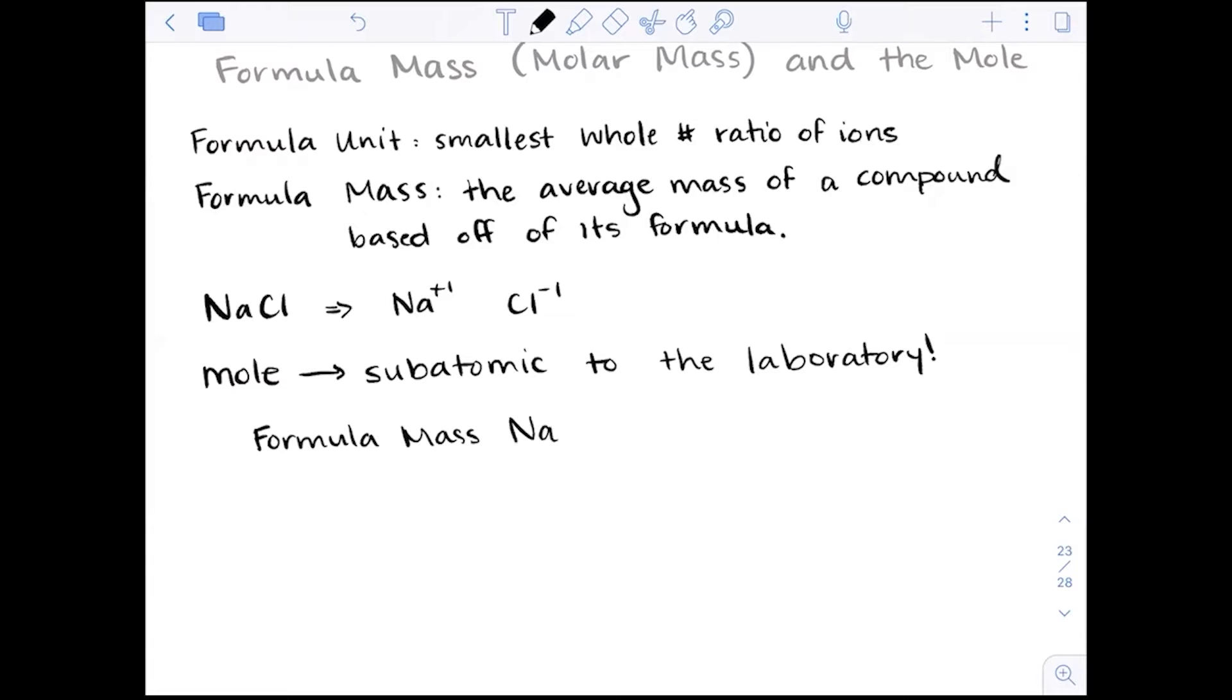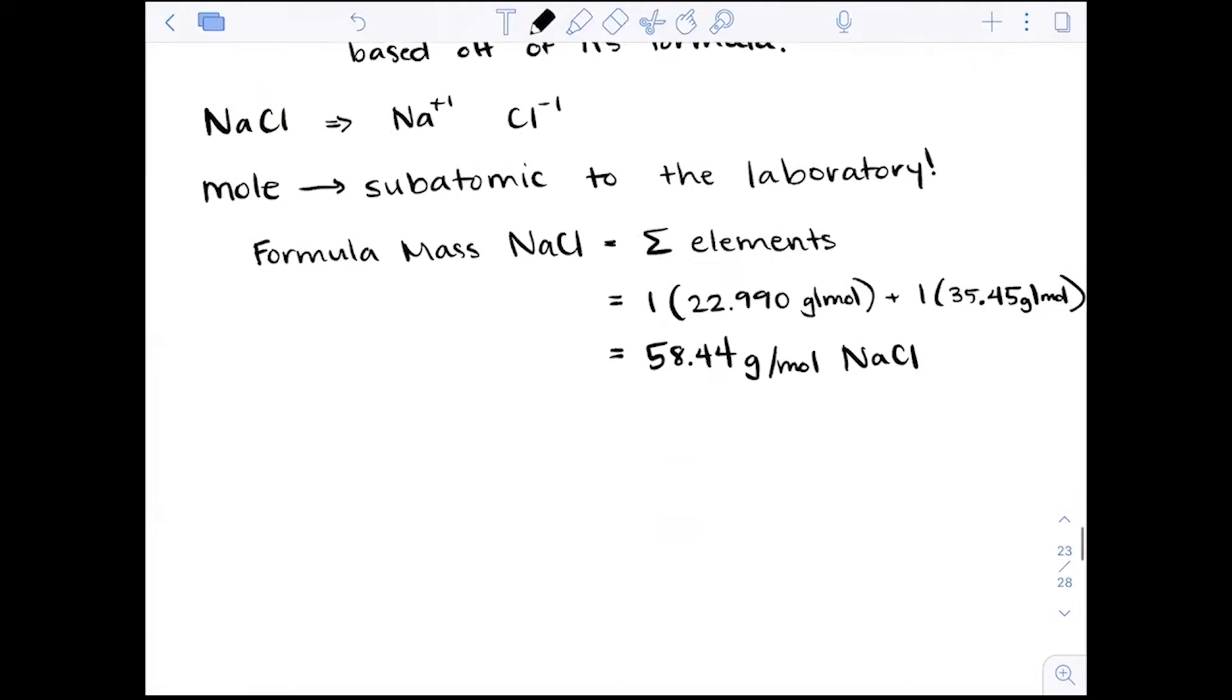So the formula mass of something like NaCl is going to be the sum of its elements. Particularly, there's one sodium which is 22.990 grams per mole plus one chlorine which is 35.45 grams per mole. They're additive together, they're 58.44 grams per mole sodium chloride. Why is that helpful? Because now we can go through the mole to get to how many atoms or how many ions.